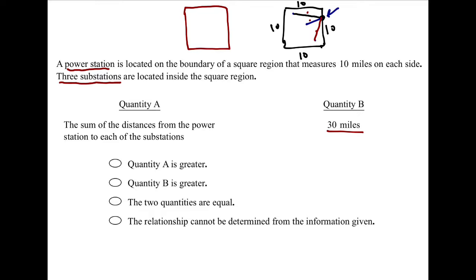My mind goes to the fact that the longest line that I can draw inside of a square that connects two points is the diagonal. The diagonal of a square breaks a square into a 45-45-90 right triangle. If I know these legs are tens, then I know this hypotenuse here is 10 root 2.